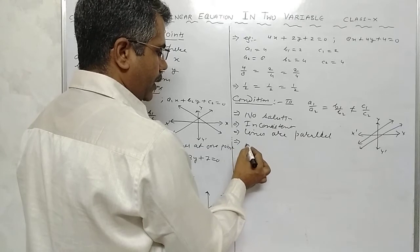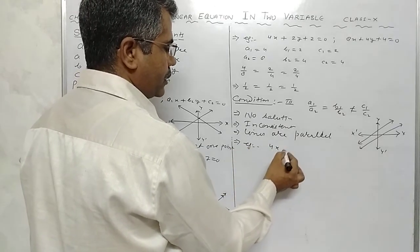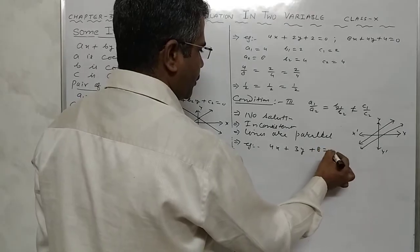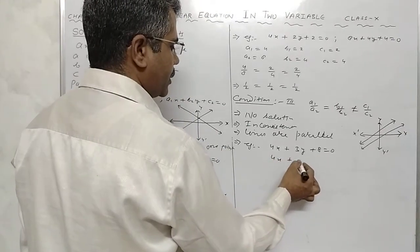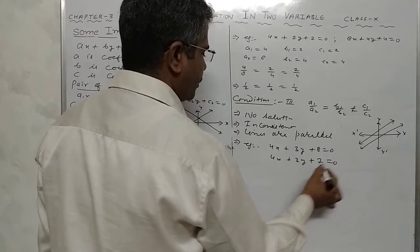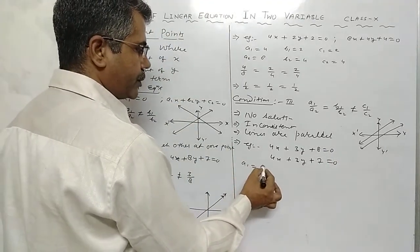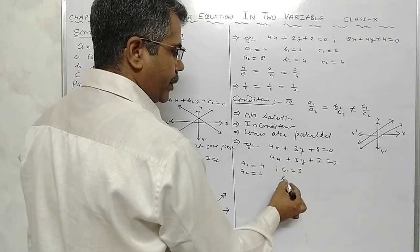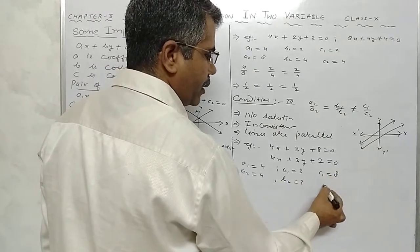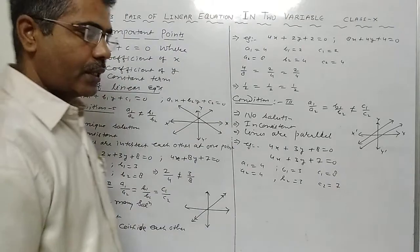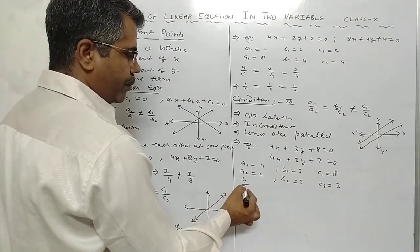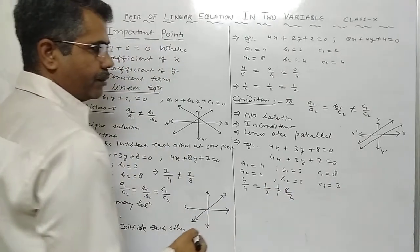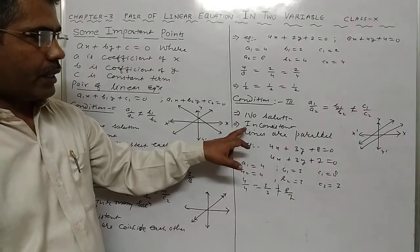Example: 4x plus 3y plus 8 equals to 0, and 4x plus 3y plus 7 equals to 0. On comparing: a1 equals to 4, a2 equals to 4, b1 equals to 3, b2 equals to 3, c1 equals to 8, c2 equals to 7. So we say no solution, inconsistent, and the lines are parallel.